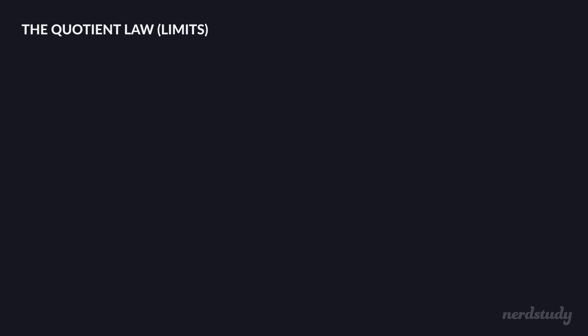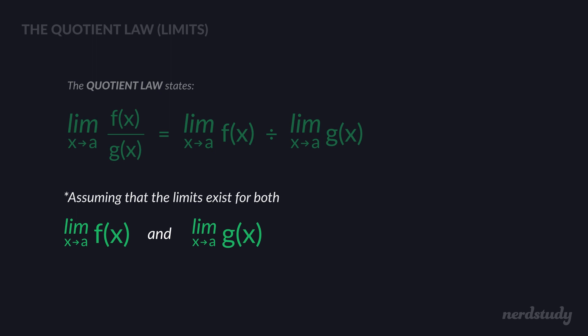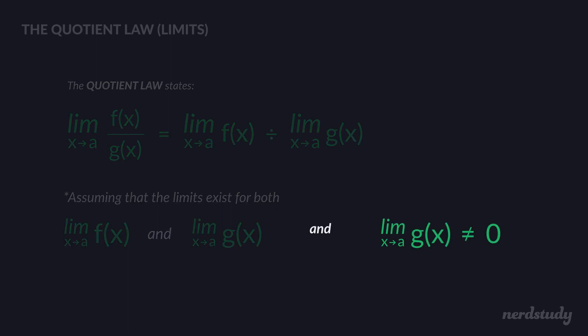Moving on to the quotient law, which is once again very similar to the product law. It states that the limit as x approaches a for a function divided by another function can be found by doing the limit of the numerator divided by the limit of the denominator. This comes with conditions: both limits must exist, and the limit of the denominator g of x cannot equal zero.